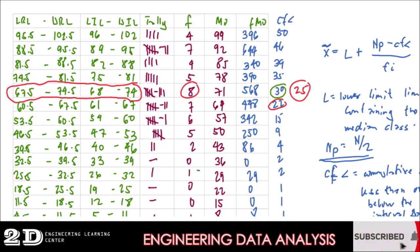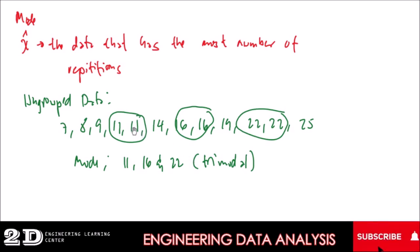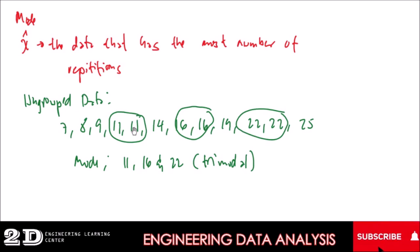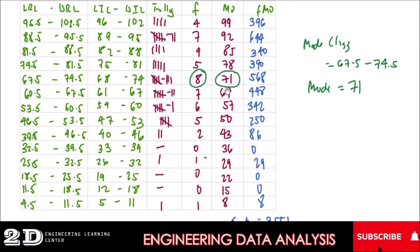For the mode, it is very easy — you just count the maximum number of repetitions and identify the data with the most repetitions. If three data values are tied for the most repetitions, you have a trimodal dataset where all three are your modes. For grouped data, you select the class interval with the highest frequency, and the midpoint of that class interval is your mode.